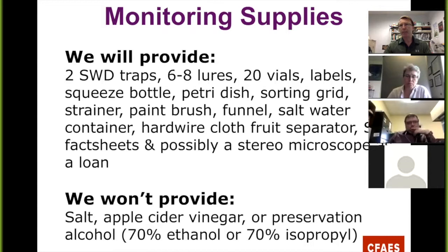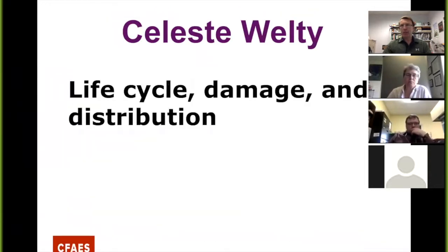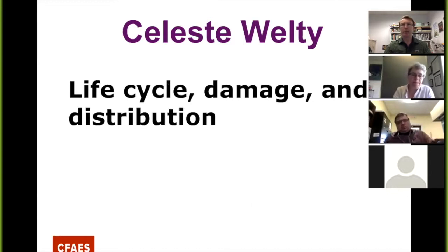The things we're not going to provide are the salt, apple cider vinegar, or the preservation alcohol — either ethanol or isopropyl. If you can't get 70% ethanol, 70% isopropyl works just fine and you can pick that up at grocery stores. With that, I'm going to go ahead and hand it over to Celeste to cover life cycle, damage, and distribution.